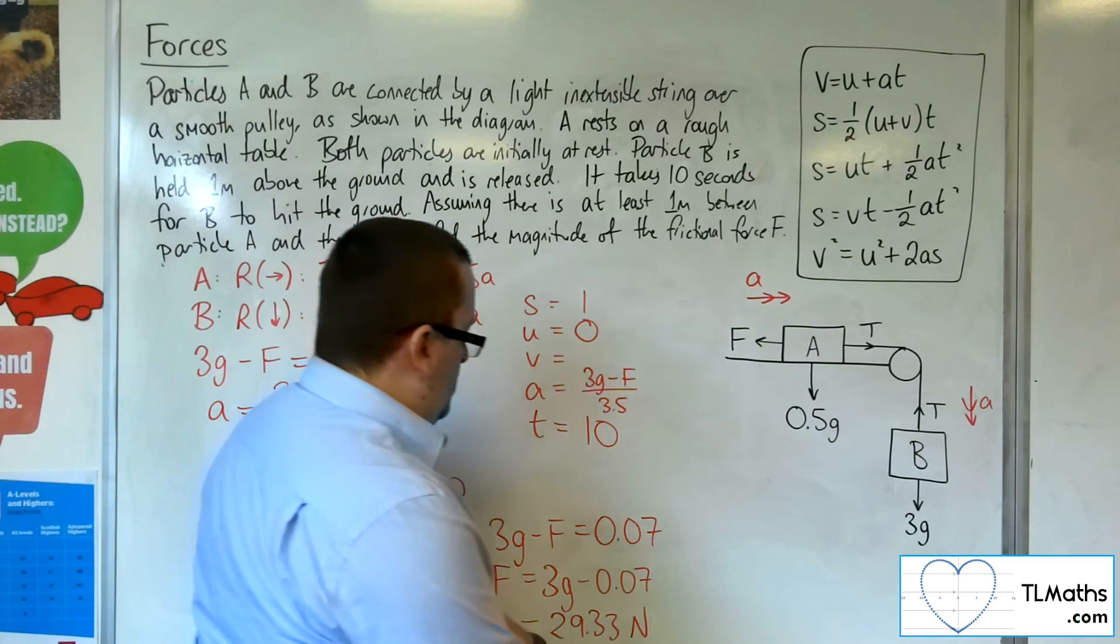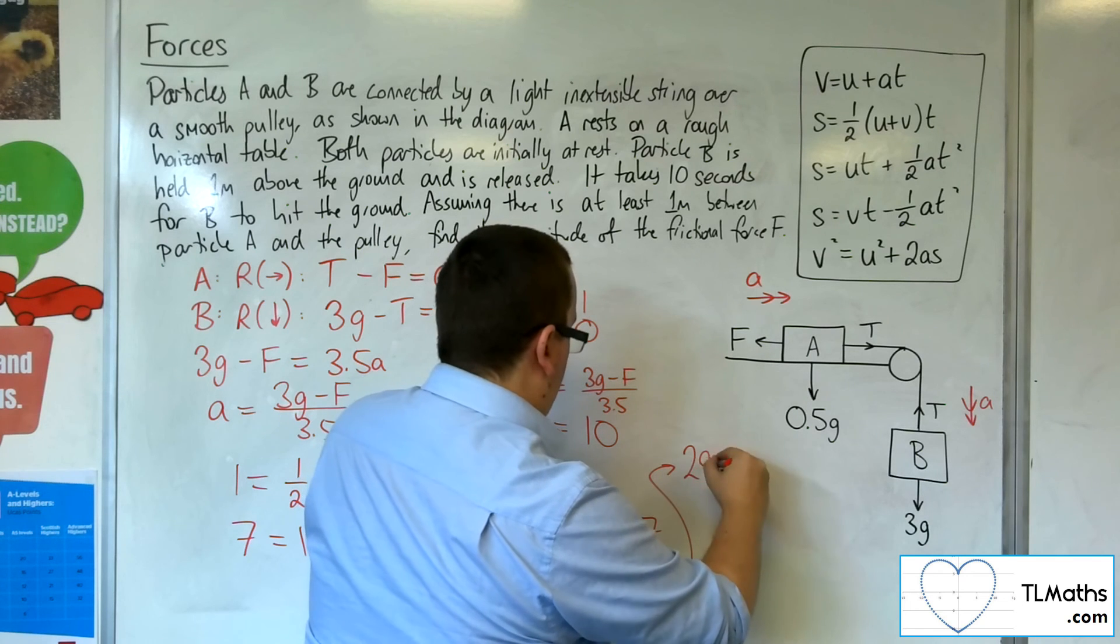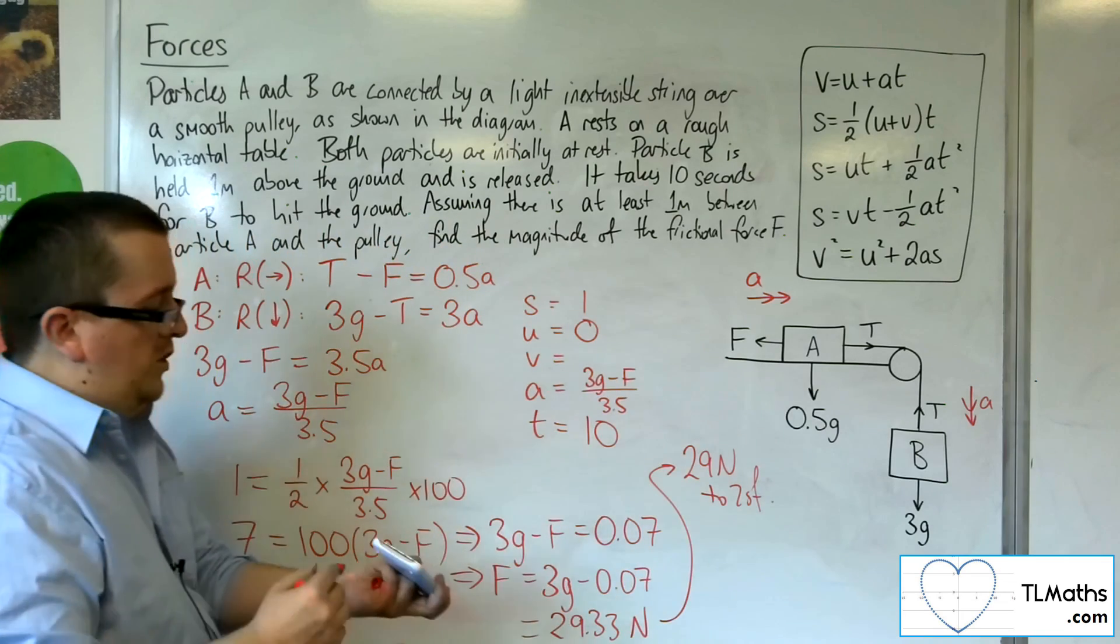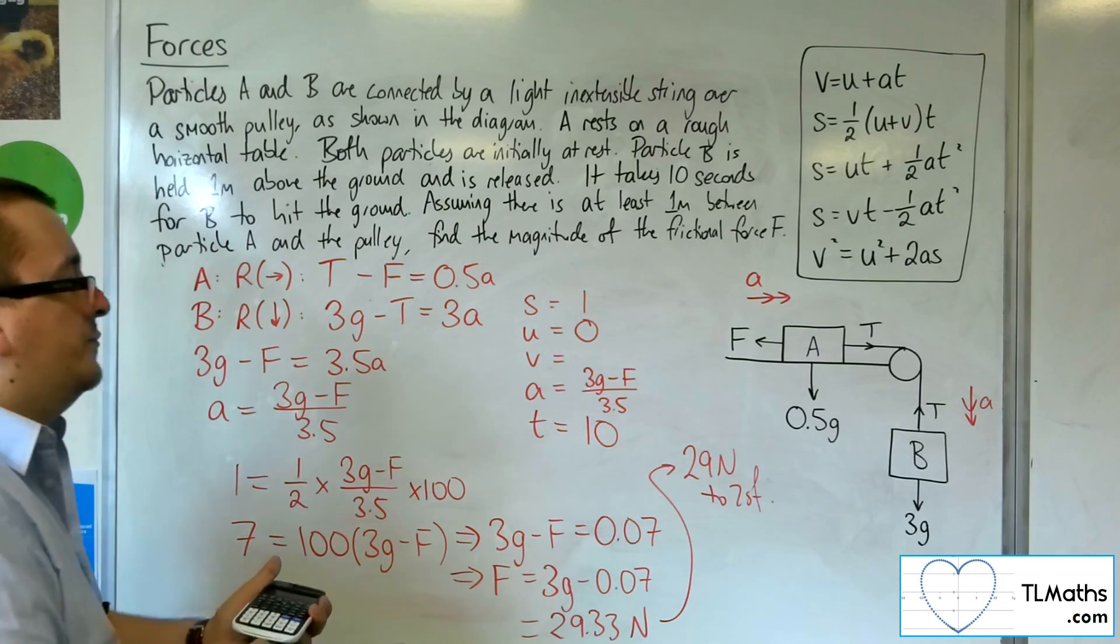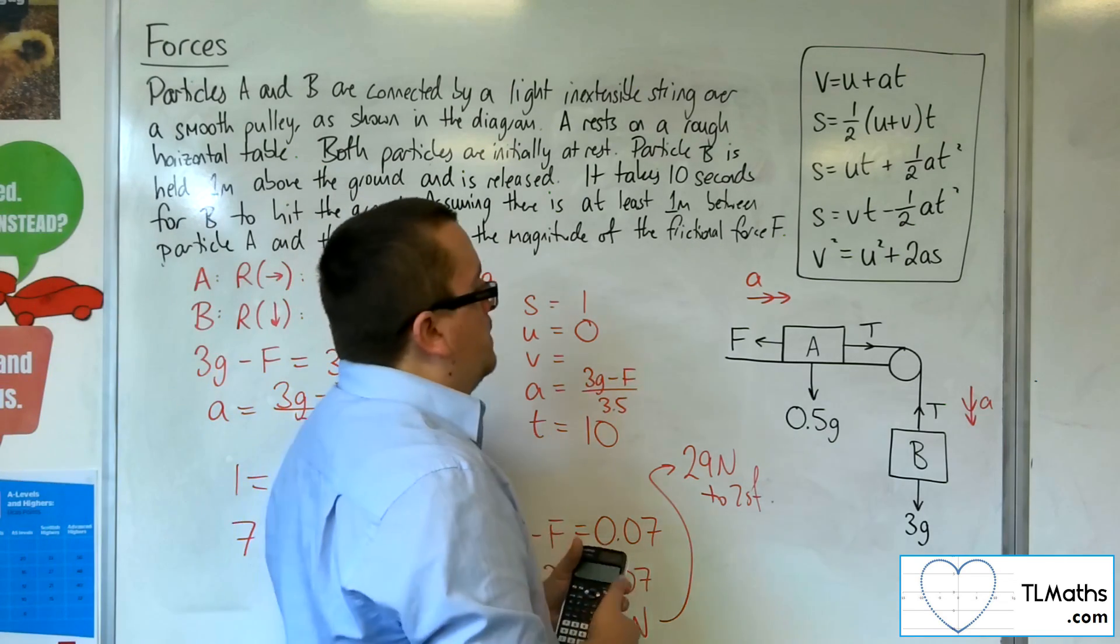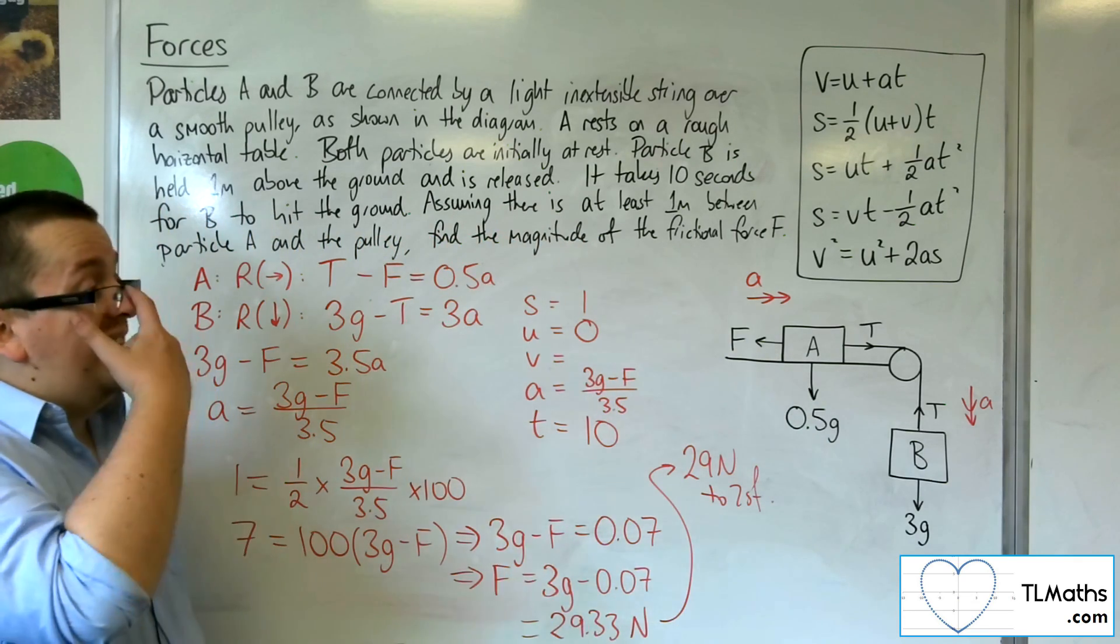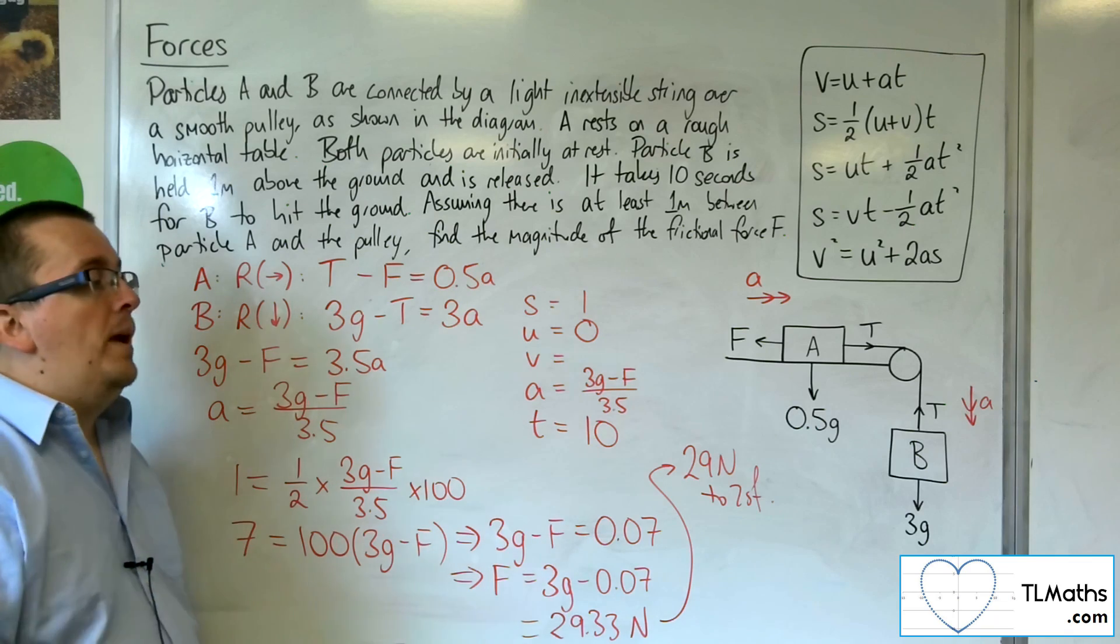So, to two significant figures, we'd be at 29 newtons. That is the frictional force that would have to be applied to A in order to slow B down enough in order for it to take 10 seconds to hit the ground.